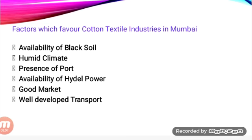In the retting process, the bark of the plant is cut and soaked in fresh water for two to three weeks. The bark then becomes soft and the fiber is removed from it. Since they need fresh water for this process, proximity to rivers is essential.